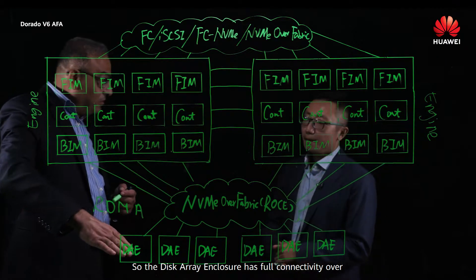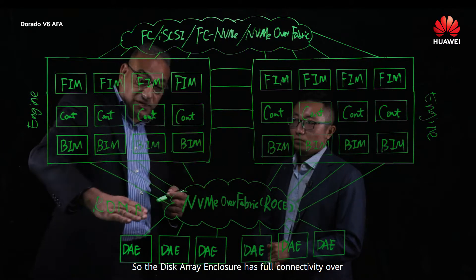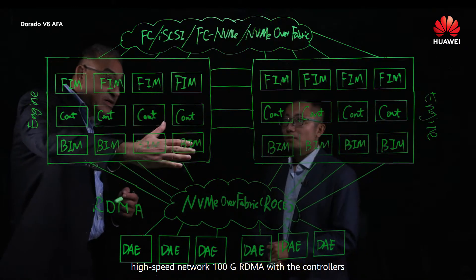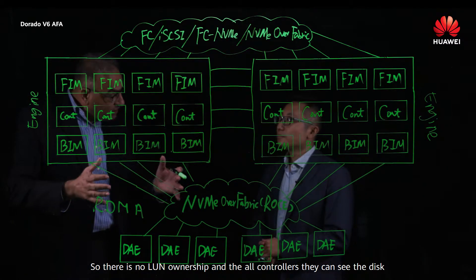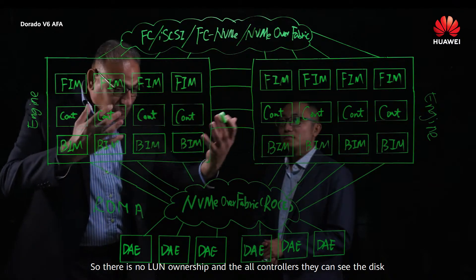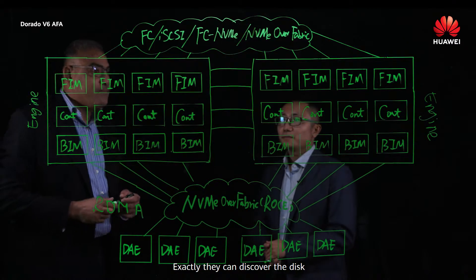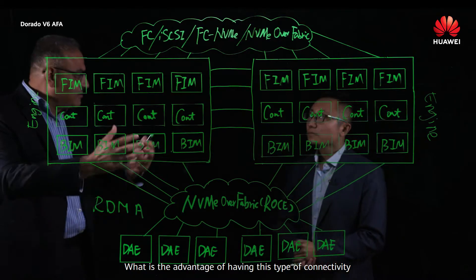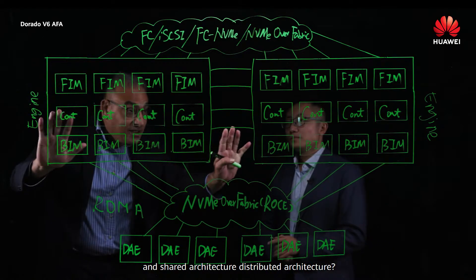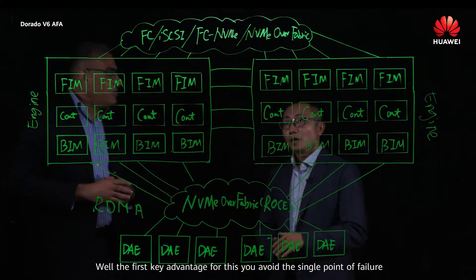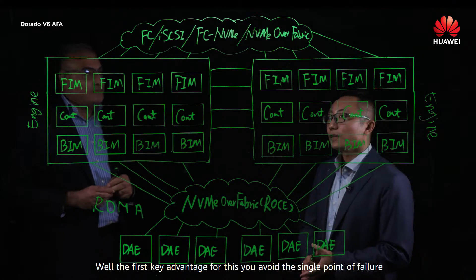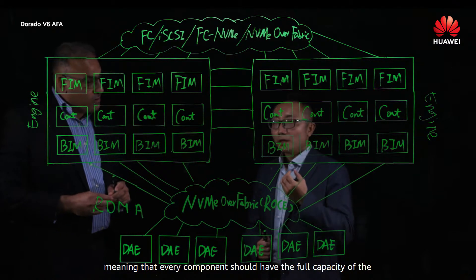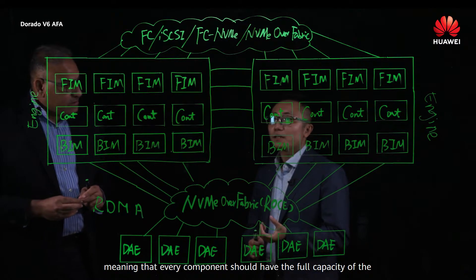The disk array enclosure has full connectivity over a high-speed network — 100G RDMA — with the controllers. There is no LUN ownership, and all controllers can see and discover the disk. The first key advantage of this is you avoid the single point of failure, meaning every component has full reliability capacity.